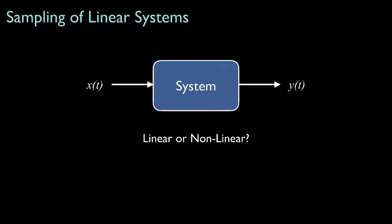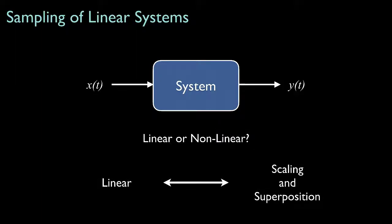There are many ways to classify systems, but one of the most important is linear versus nonlinear. Linear systems are characterized by two properties: scaling and superposition.